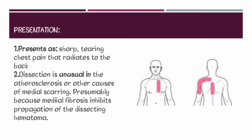Now let us see the presentation of the patient. Typical signs and symptoms include sudden severe chest and upper back pain, often described as a tearing or ripping sensation that radiates to the neck and down the back. There is sudden severe stomach pain as well. An important point is that aortic dissection is unusual in atherosclerosis.